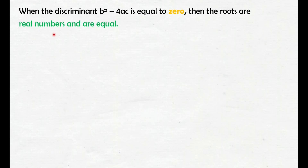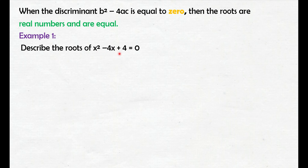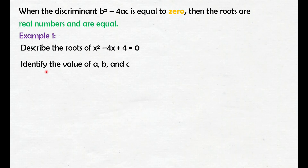When the discriminant b squared minus 4ac is equal to 0, then the roots are real numbers and are equal. Kapag yung discriminant natin equal sa 0, yung makukuha nating roots ay real numbers and are equal. Example number 1: describe the roots of x squared minus 4x plus 4 equals 0. Una nating gagawin is identify natin yung value ng a, b, and c.